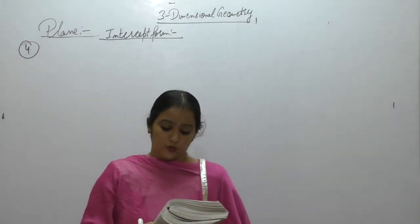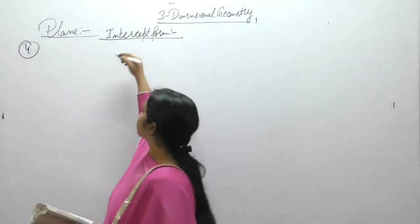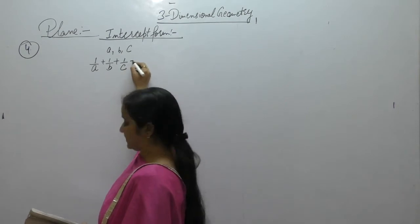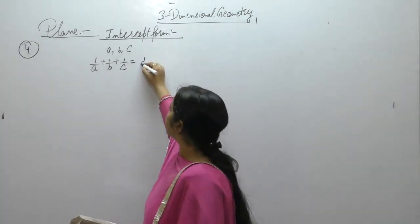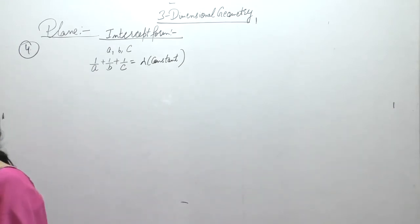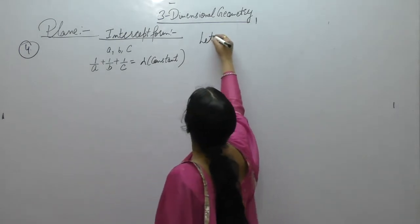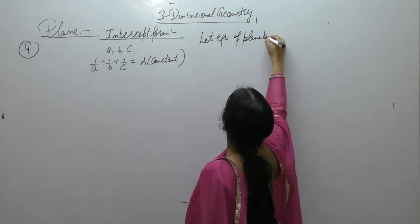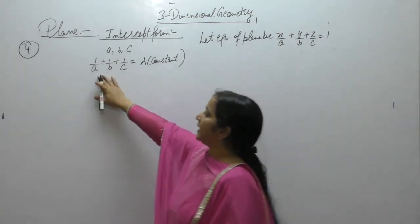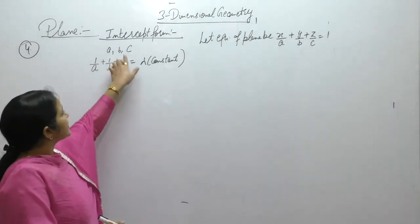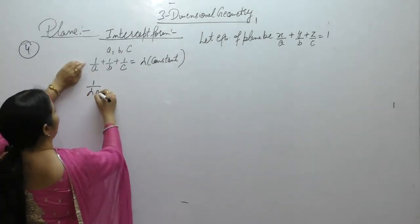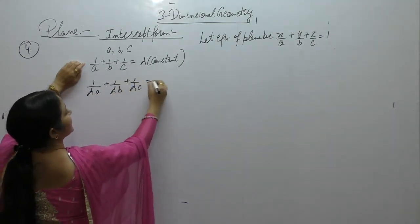A variable plane moves such that the sum of reciprocals of its intercepts on the three coordinate axes is constant, say λ. Show that the plane passes through a fixed point. Let the equation of the plane be X/A + Y/B + Z/C = 1. We are given that 1/A + 1/B + 1/C = λ, which can be written as (1/λA) + (1/λB) + (1/λC) = 1.